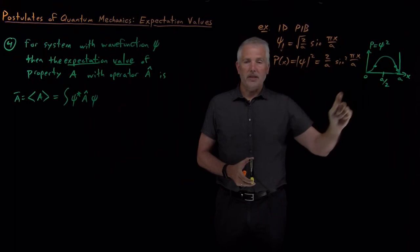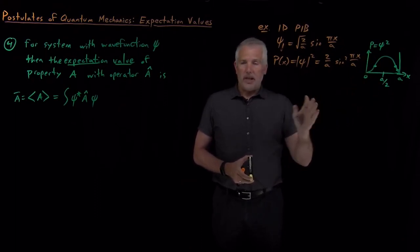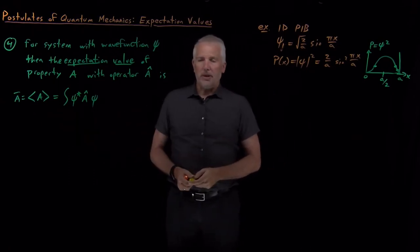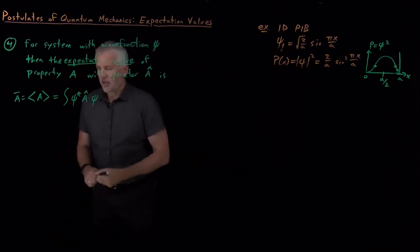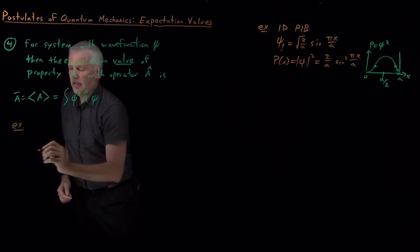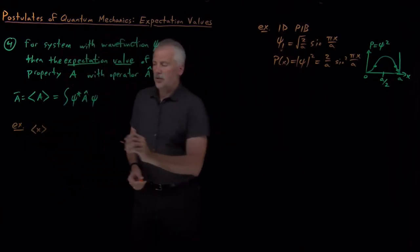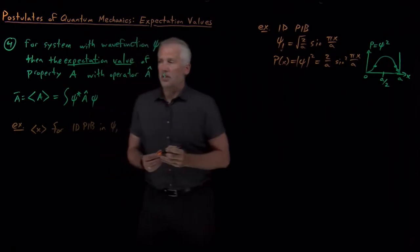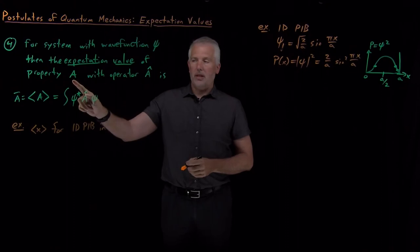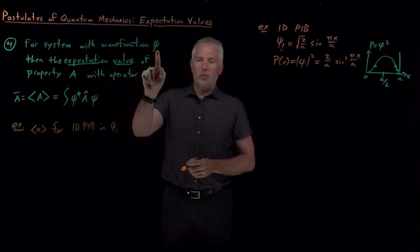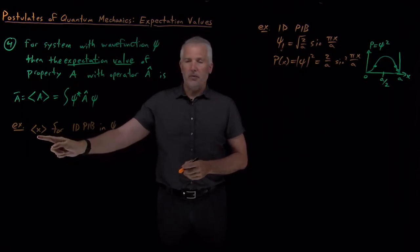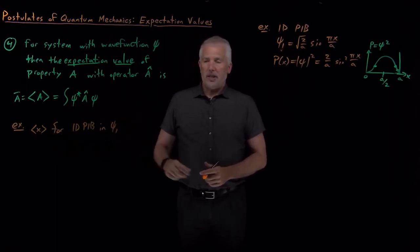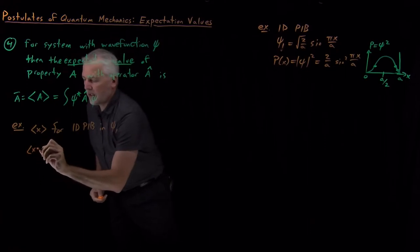For example, if the property is the position of the particle, on average it's going to be in the middle of the box. Sometimes it's on the left side, sometimes on the right side, but on average I expect to find it in the middle. Any one measurement is unpredictable, but if I make a number of measurements one after the other, I can predict what the average of those measurements will be. To calculate an expectation value, I need to know the property of interest, the operator for that property, and which wave function the system is occupying.